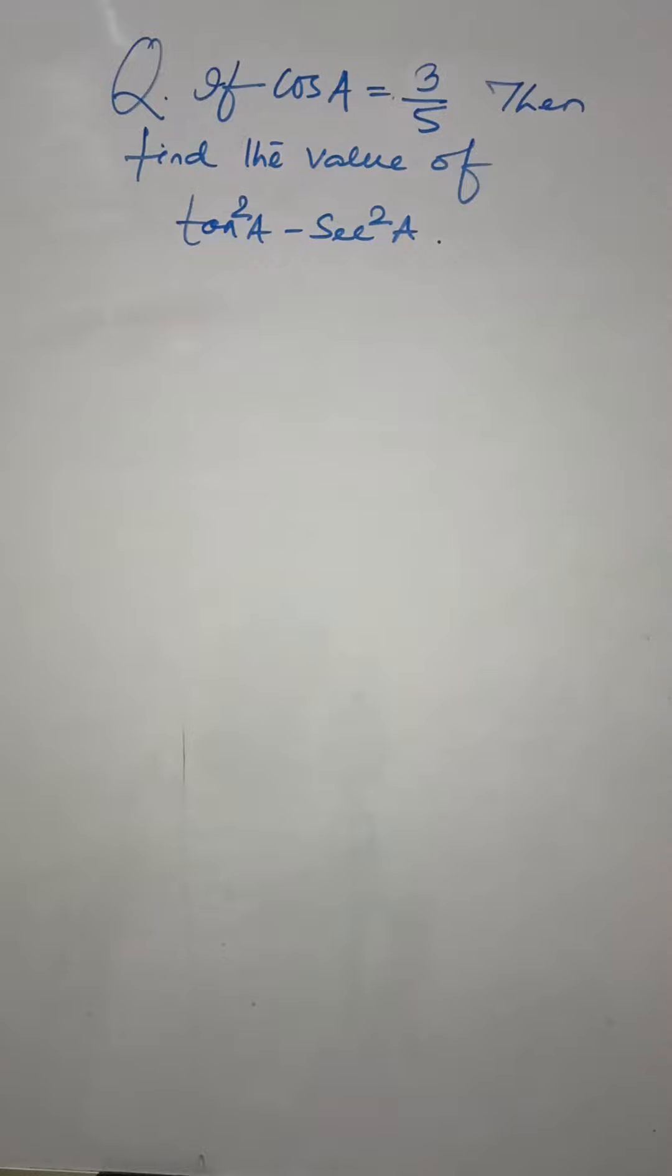If cos A is equal to 3 by 5, then find the value of tan square A minus sec square A.